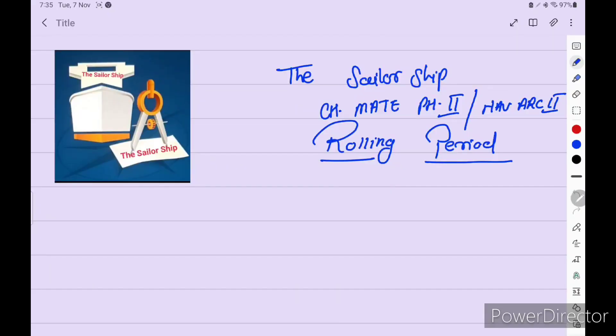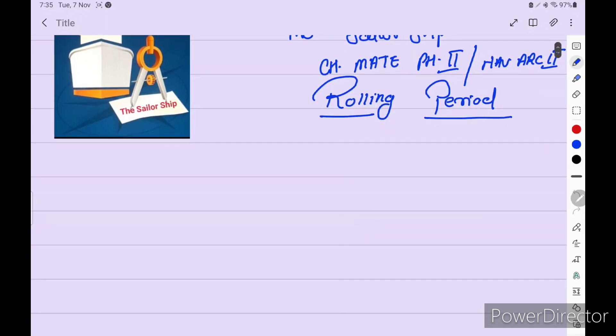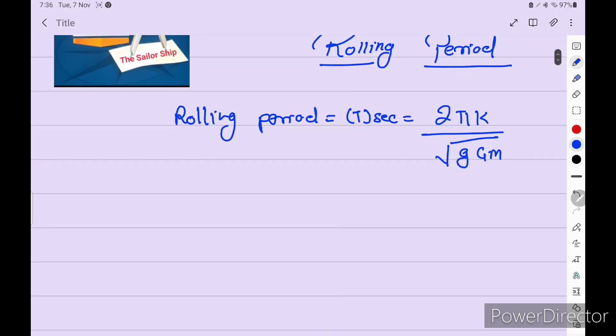Let's discuss Naval Act 2 Chapman phase 2. We'll discuss rolling period numerical. First, we'll discuss the formula of rolling period. Rolling period is equal to T in seconds equals 2πk divided by under root small g and GM metacentric height. This is our formula.